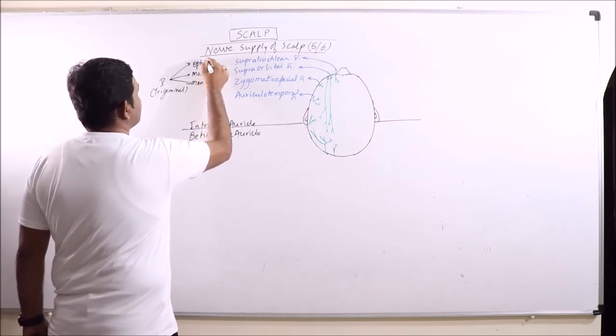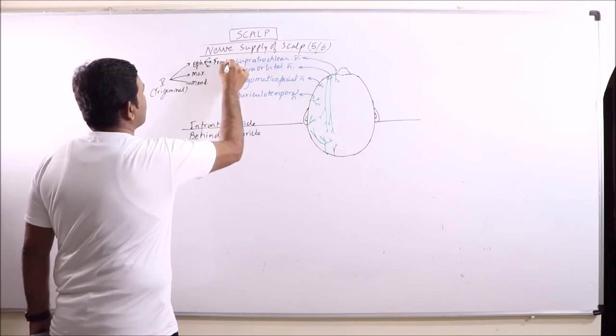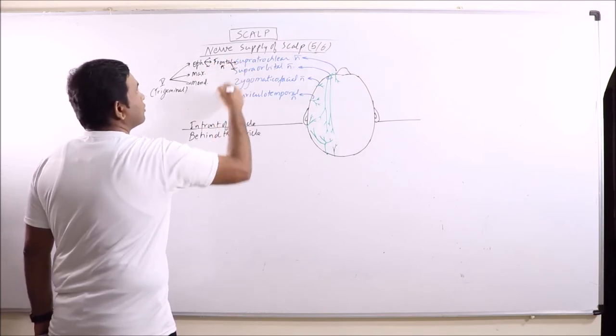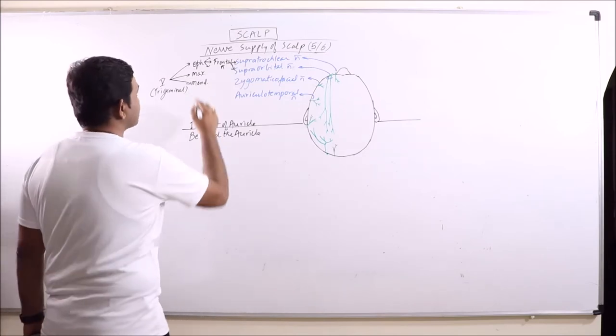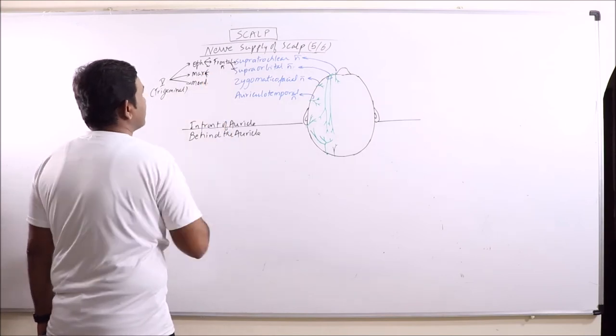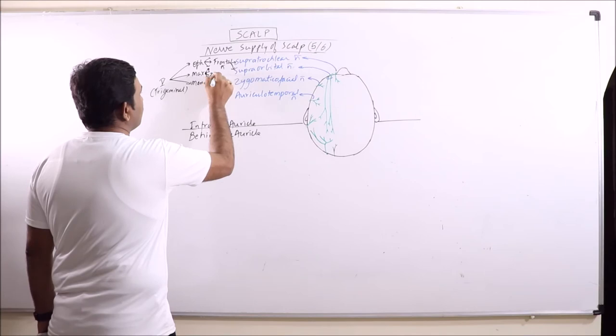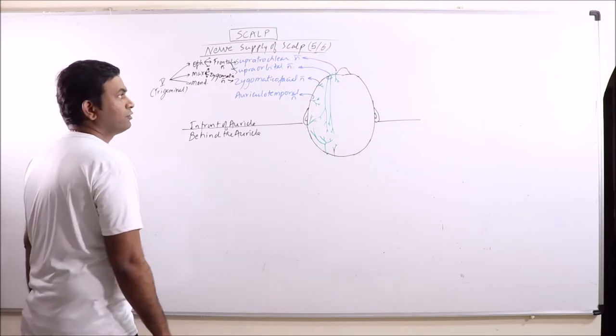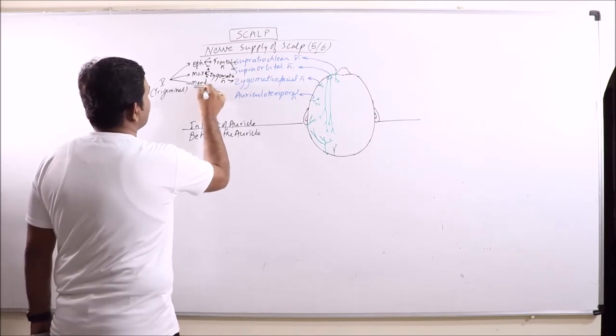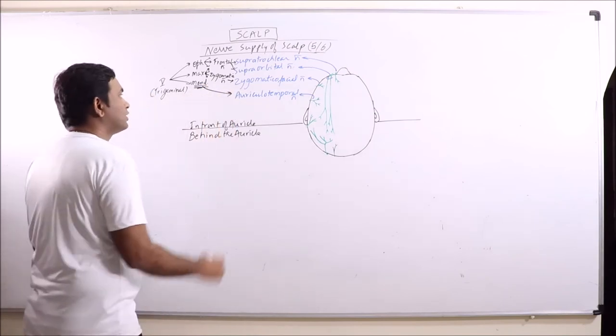Ophthalmic division is having many branches out of which one is frontal nerve from which the supra-trochlear nerve and the supra-orbital nerve arises. Maxillary is also having many divisions from which one is zygomatic nerve. It gives rise to zygomatico-facial nerve. And this is the mandibular division which finally gives to auriculotemporal nerve.